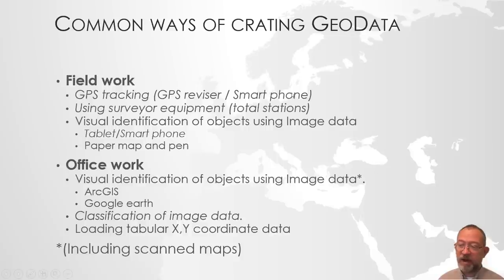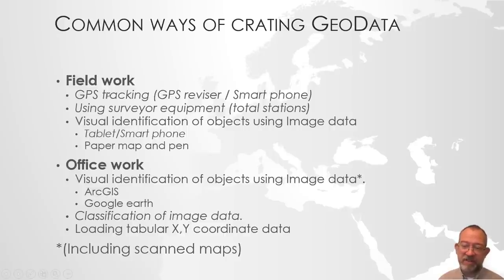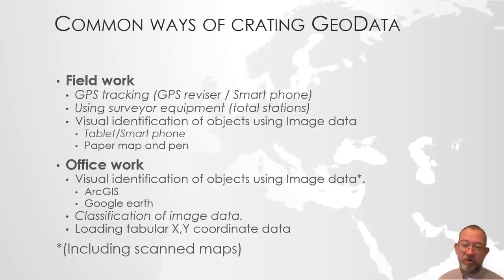The smartphone has the advantage that it can also locate itself using the telephone network or Wi-Fi networks. The disadvantage of using GPS trackers is that they can only register the location of where the device is, and that's fine if you are going to track animal movements or how people navigate through an area.